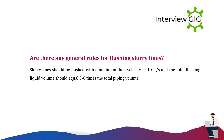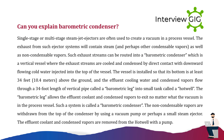Are there any general rules for flushing slurry lines? Slurry lines should be flushed with a minimum fluid velocity of 10 feet per second, and the total flushing liquid volume should equal three to six times the total piping volume.